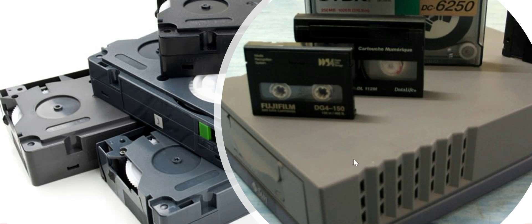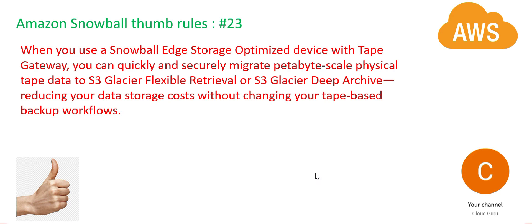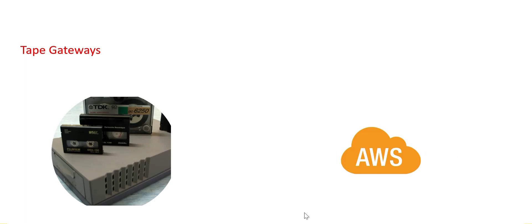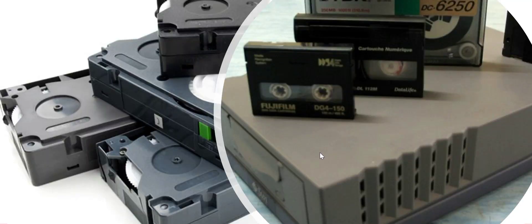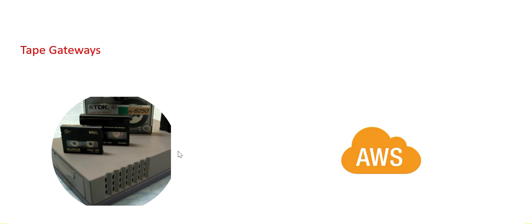Backup tapes in your current on-premises are used to store data as a backup — if any disaster happens, you can restore from these tapes. If you want to move these tapes through Snowball, use a storage optimized device with tape gateways. Tape gateways are very useful to copy data from tapes to AWS. We copy it to Glacier because these tapes are cold storage — nobody accesses them frequently, only if a disaster strikes. When moving cold storage to AWS, it should go into cold storage, which is Glacier.